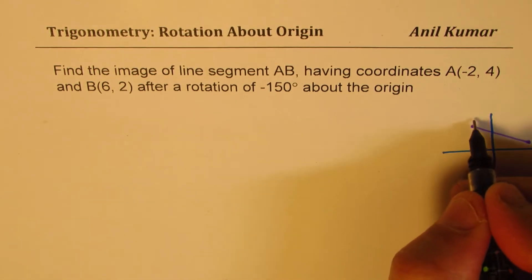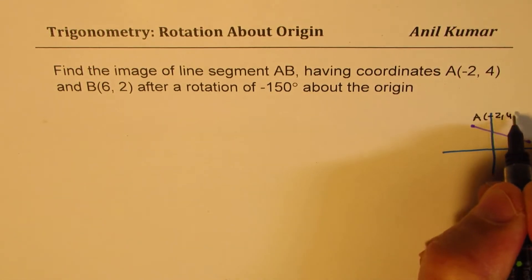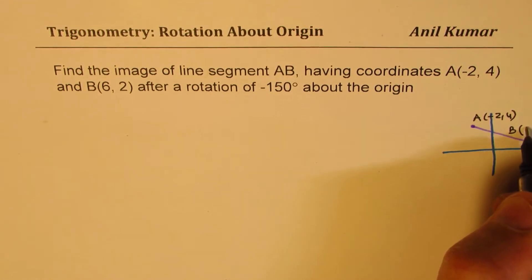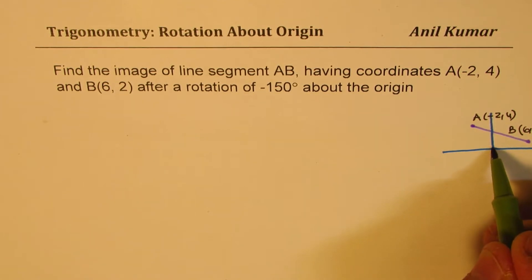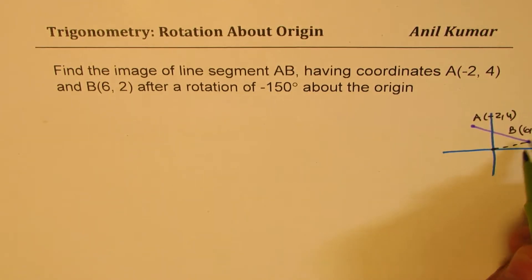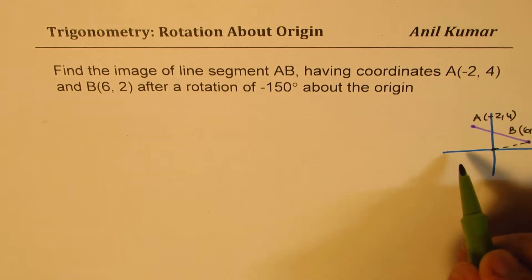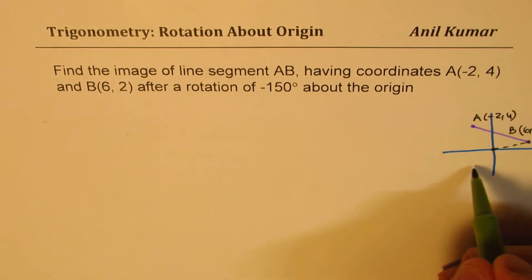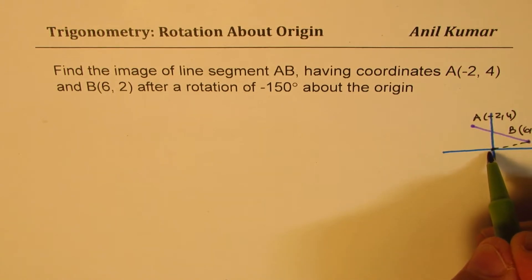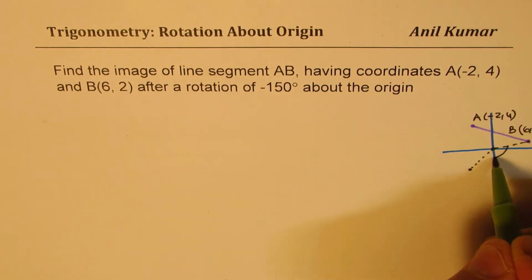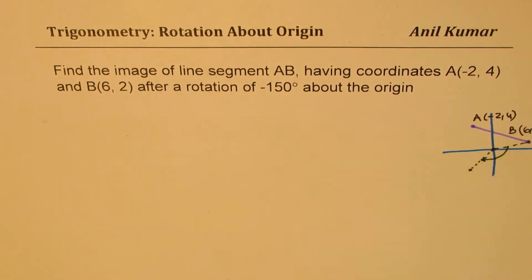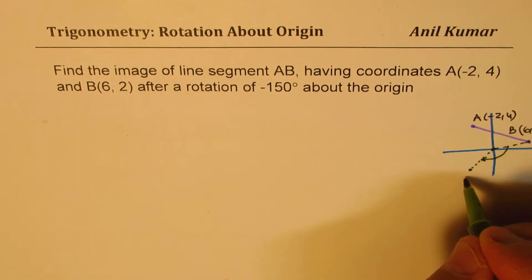We write A as (-2, 4) and B as (6, 2). When we say there is a rotation of 150 degrees, this rotation is about the origin. We connect point B and rotate it 150 degrees. Since it is minus 150, we go clockwise — 150 is 30 less than 180 — so it will come to a new position, which is B dash.